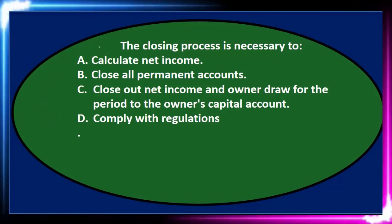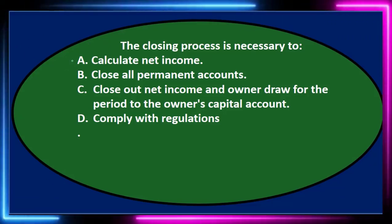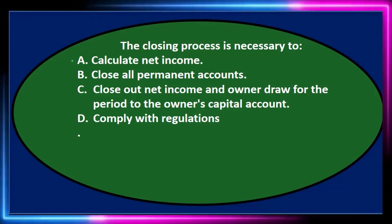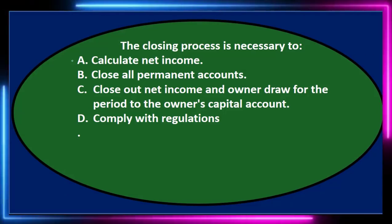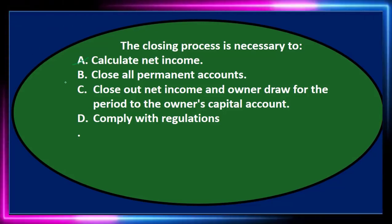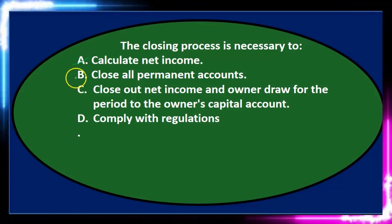The closing process is necessary to calculate net income — that's not right. The closing process isn't used to calculate net income; we've already prepared the adjusted trial balance and financial statements, including the income statement calculating net income, before the closing process. The closing process zeros out revenue and expense accounts to prepare for the next period. B says close all permanent accounts — that's backwards. We close the temporary accounts, not the permanent ones.